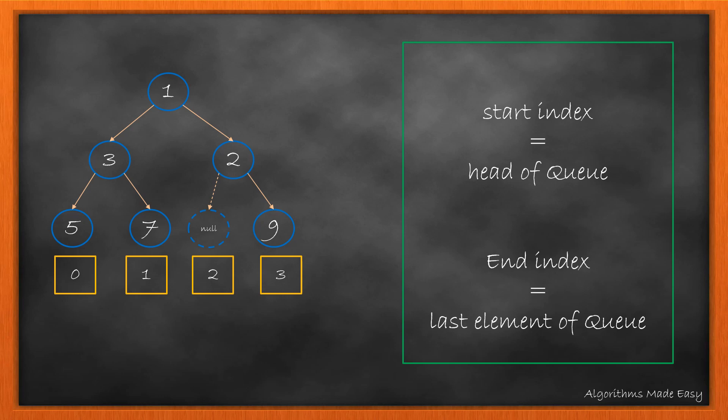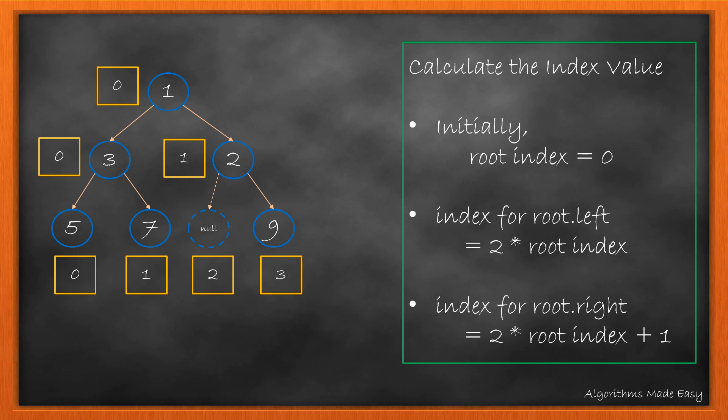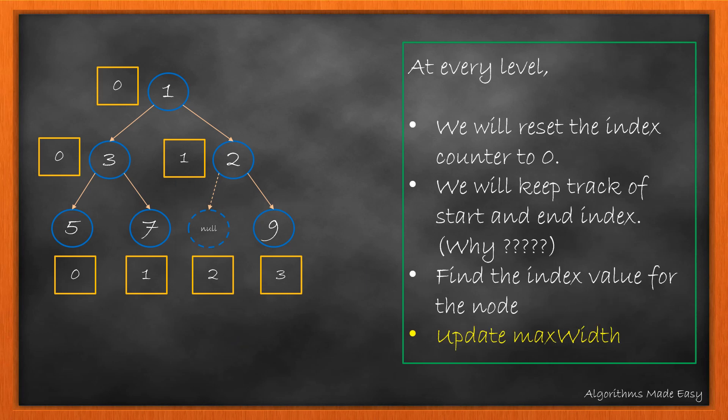Now let's see how we keep track of start and end. At start of the loop at every level, the index of head of the queue or the first node in the queue is the start index. And while exiting the level, index associated with that node will be the end index. Now how to calculate the index for each node? The index for a level will start from 0. So for root, the index will be 0. For nodes in other level, we will calculate the index from a parent node. For left node, the index is 2 times root index while for the right node, it is 1 more than the left node. So the formula becomes 2 times root index plus 1. Let's take our example and calculate the index. Here, we can see that the formula works as required.